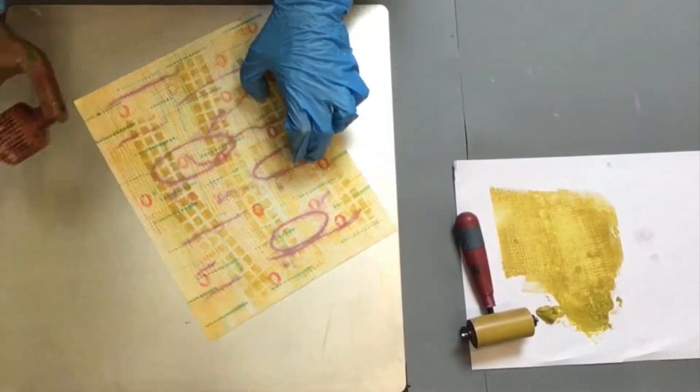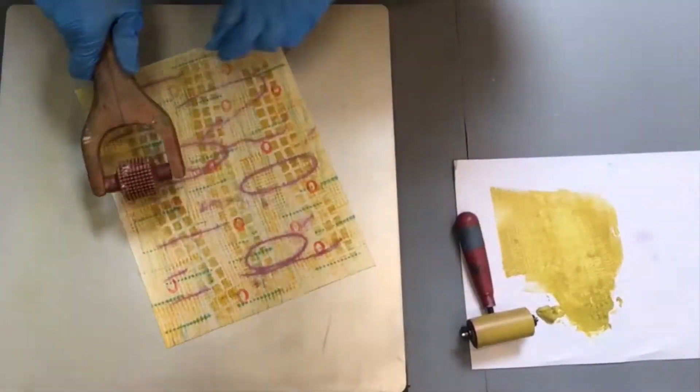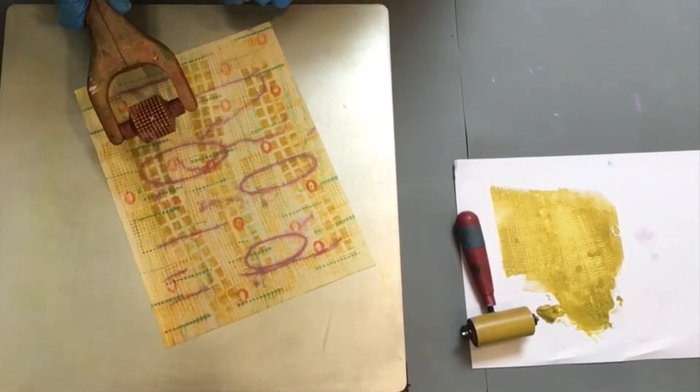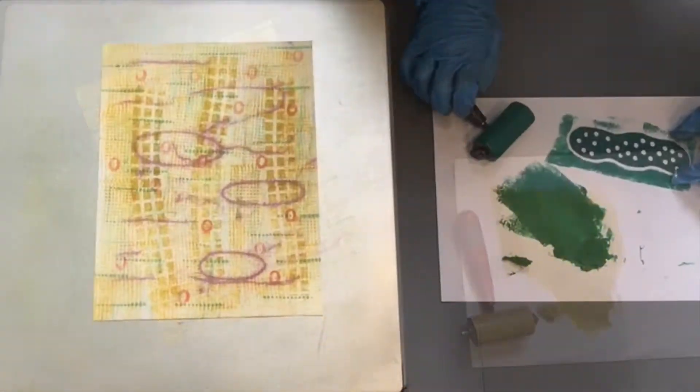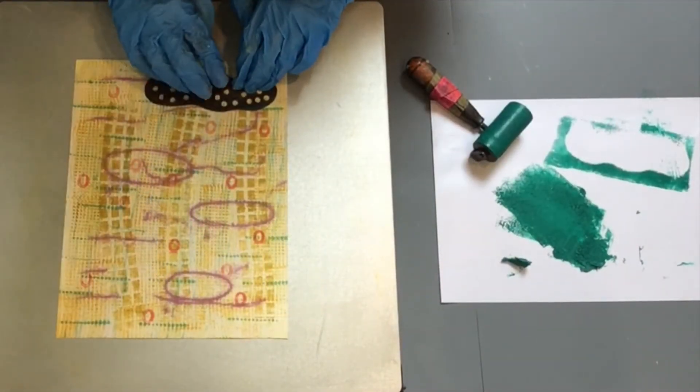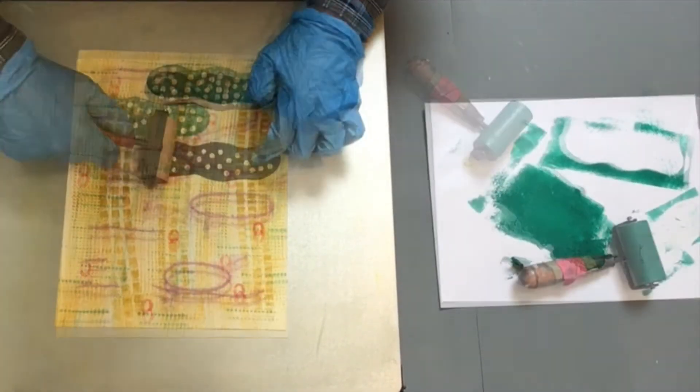This is a ceramic texture roller. Here's a piece of cut cardboard that I'm using as a relief print.